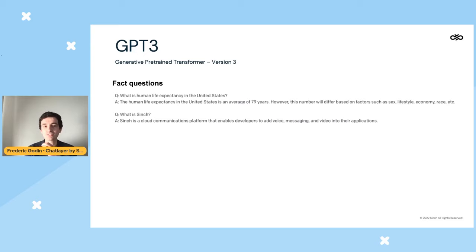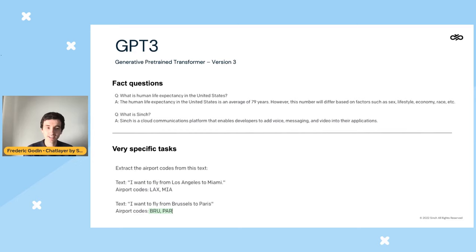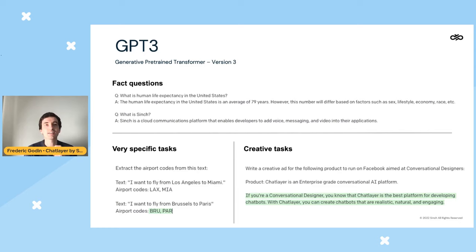You could also teach it very specific tasks, like extracting airport codes from text messages. I told GPT-3 to extract airport codes and gave it one example. Then I gave it a new sentence — 'I want to fly from Brussels to Paris' — and it came up with the airport codes BRU and PAR by itself.